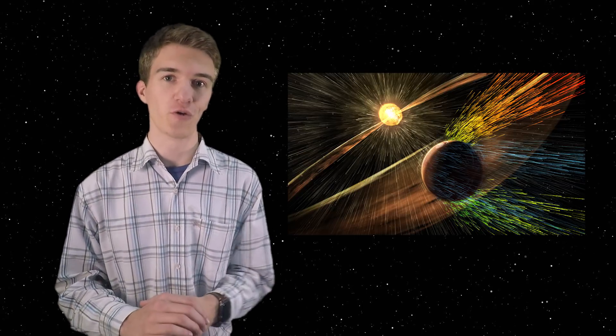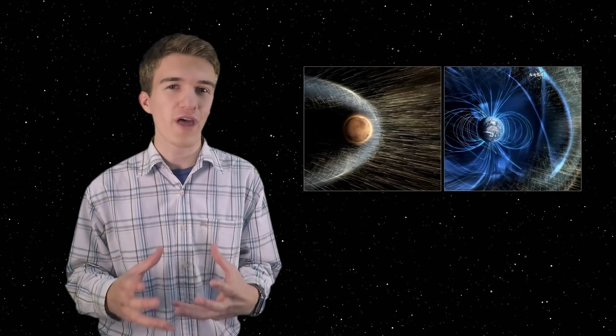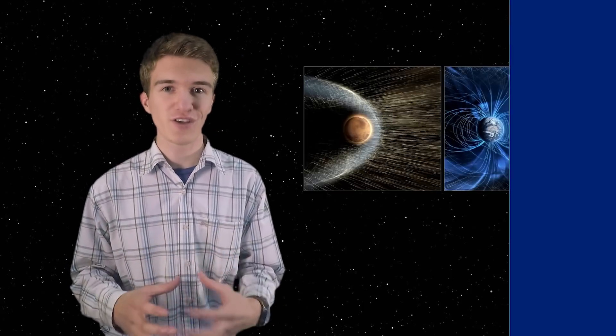Every four seconds, Mars loses one pound of its atmosphere due to solar winds. How can we protect Mars from losing its atmosphere? What timescales are we looking at in losing its atmosphere? And what does Earth have that Mars doesn't? Let's talk about that.